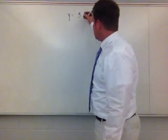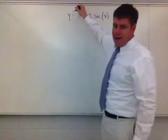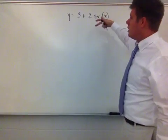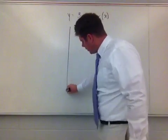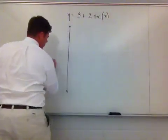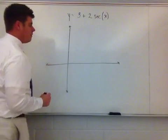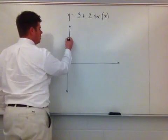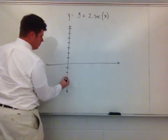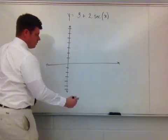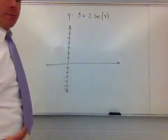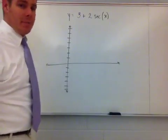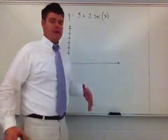The value you're adding or subtracting outside of the trigonometric function is your vertical shift. Looking at this graph, I find I have a vertical shift of 3, so I count up 1, 2, 3 and label the axes accordingly. The period isn't going to change because the coefficient of x is 1.